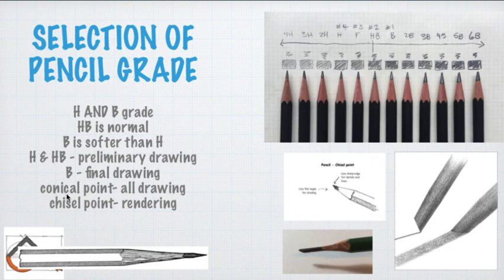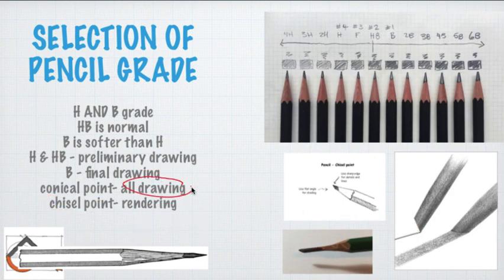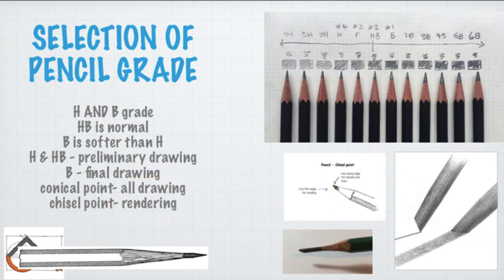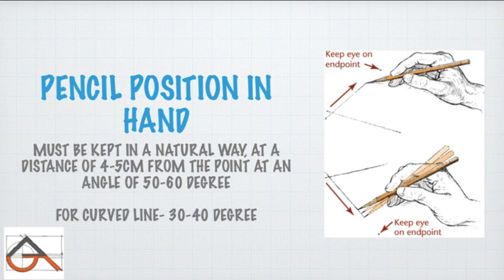Next is pencil point type. The point of a pencil can be conical or chisel-shaped. Conical means the point tapers to a sharp tip, while chisel means the tip is flat like a blade. For guidelines and sketching you use the conical point, while the chisel point is used for shading and rendering. With the chisel point, one sharp edge allows detailed work and the flat face handles broader shading areas.